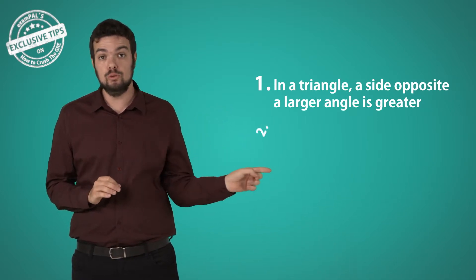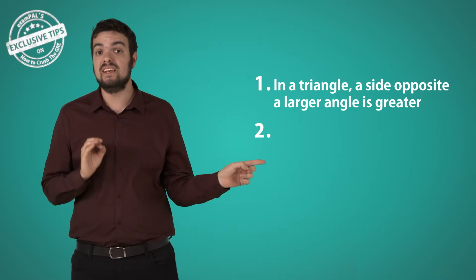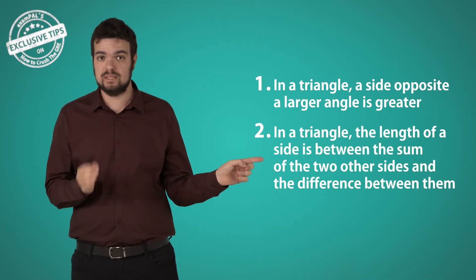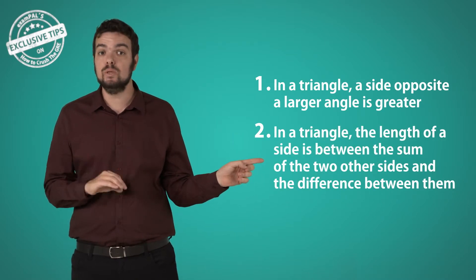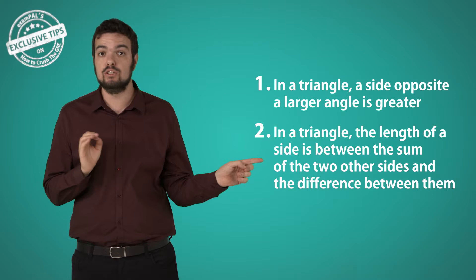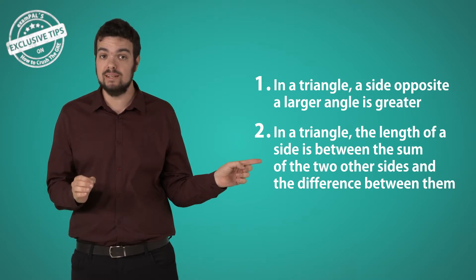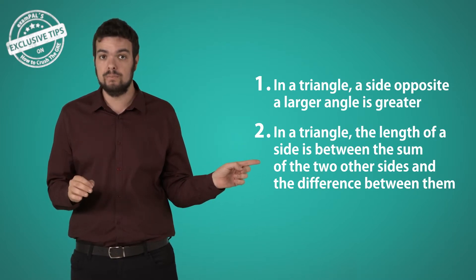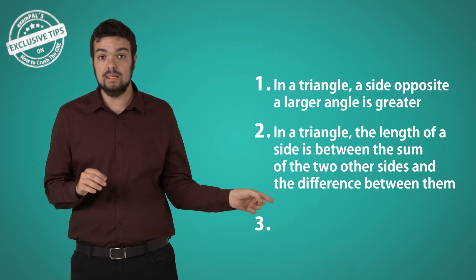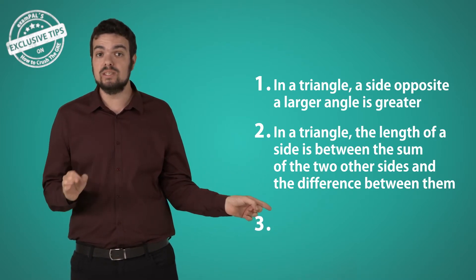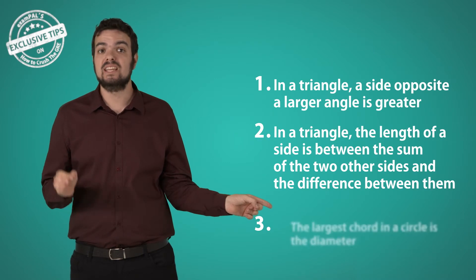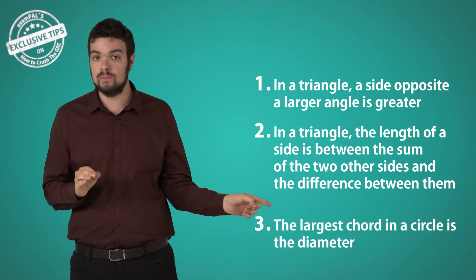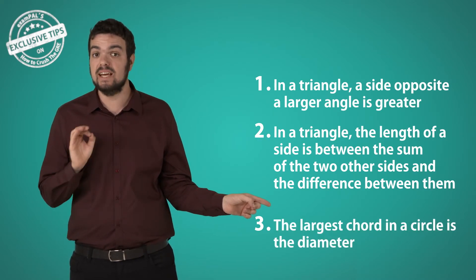2. Using the rule that in a triangle, the length of a side is between the sum of the two other sides and the difference between them. 3. Using the rule that the largest chord in a circle is the diameter.